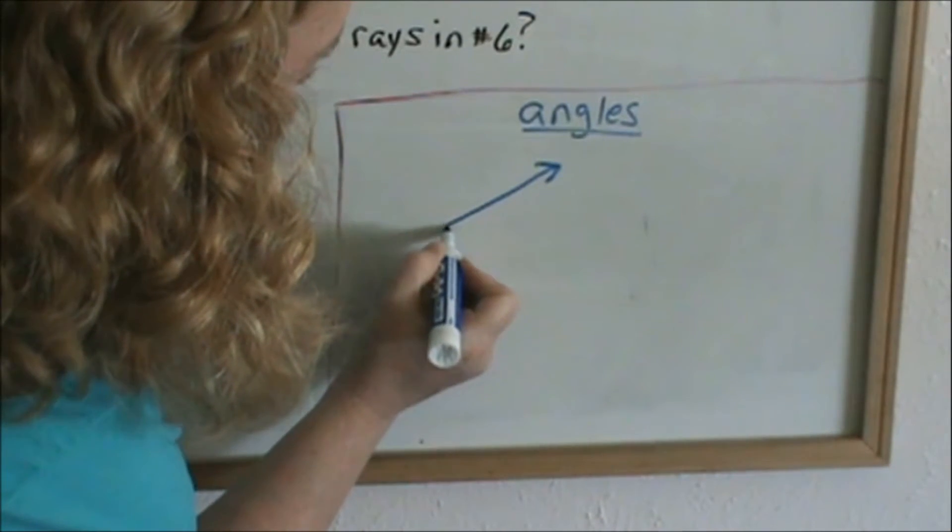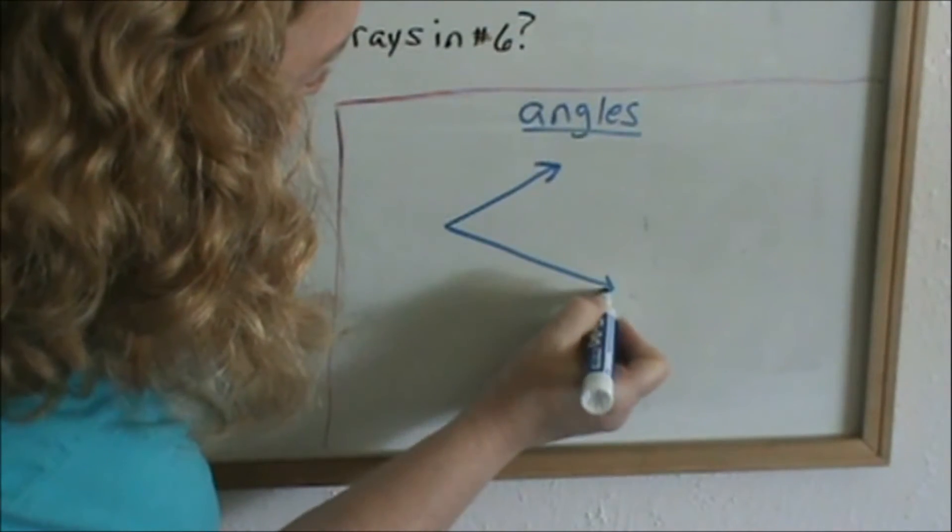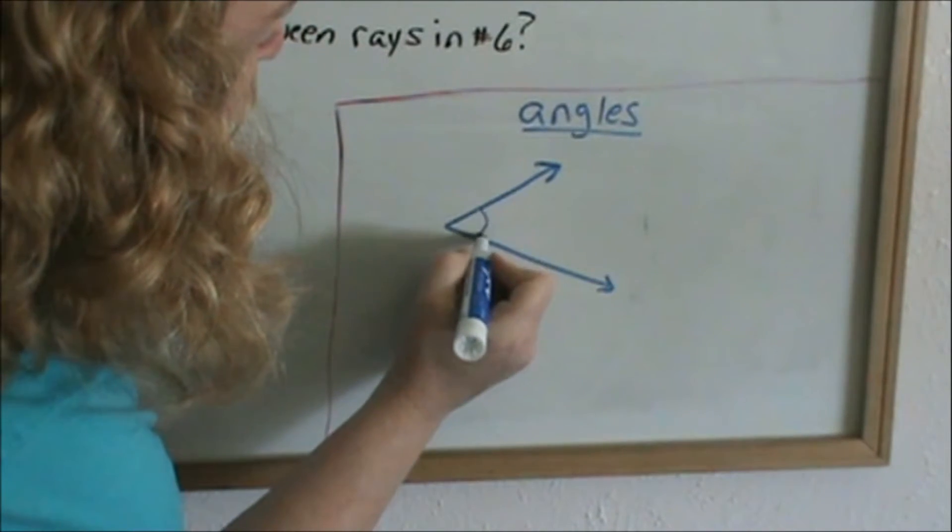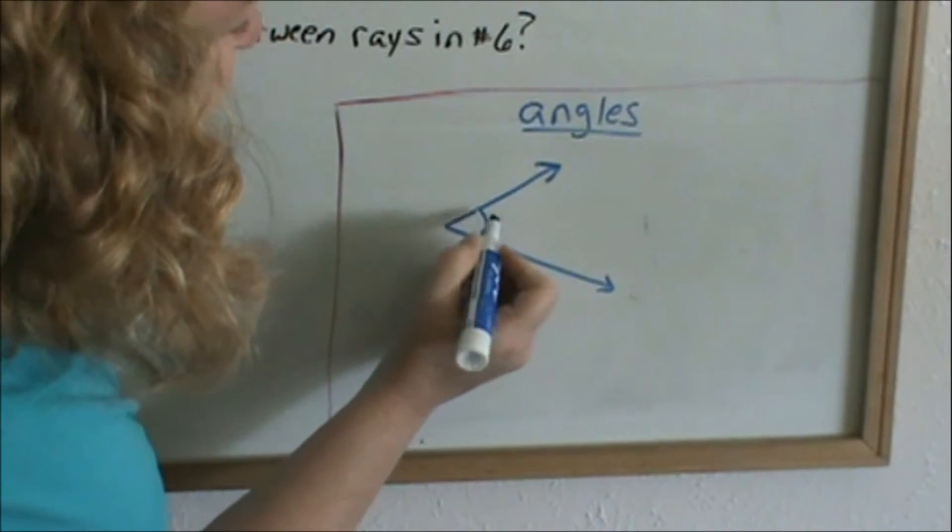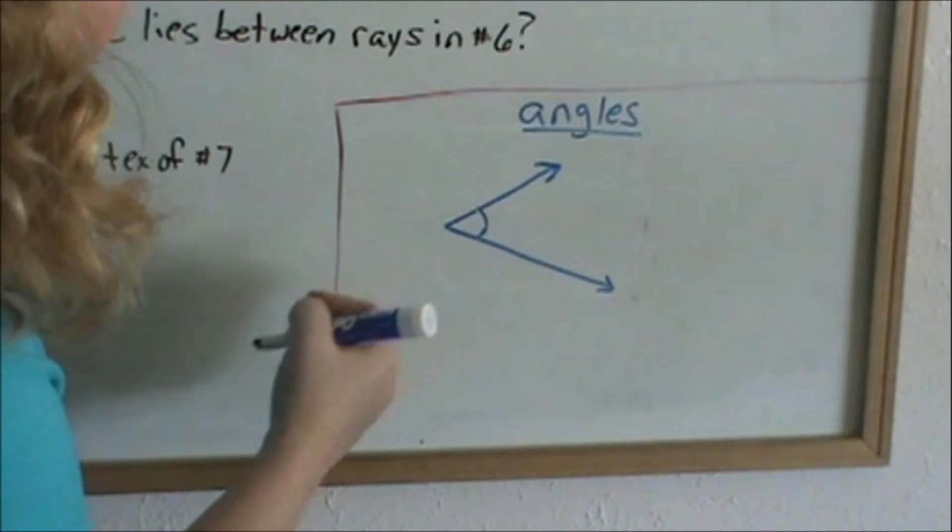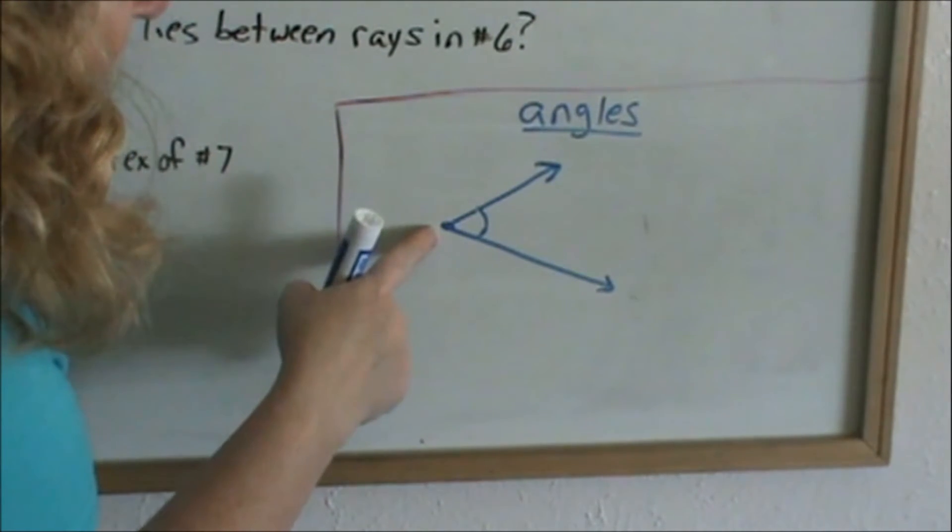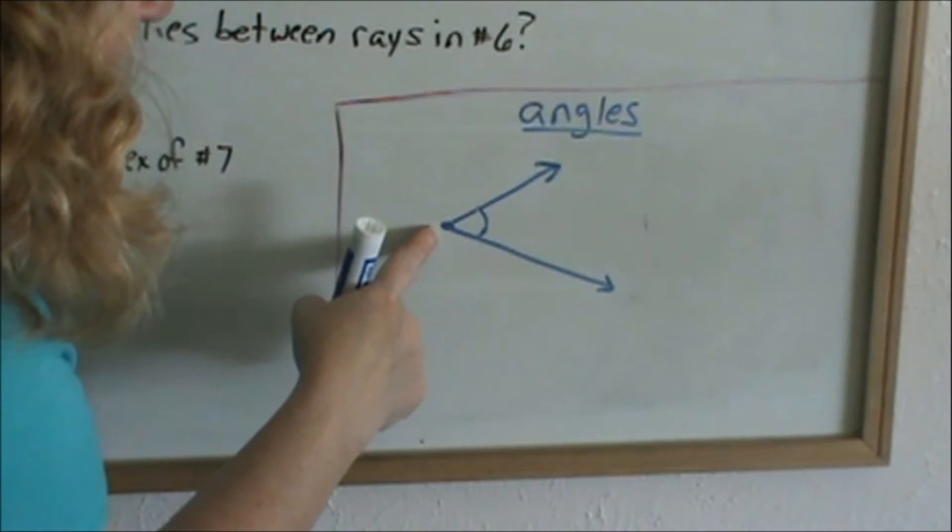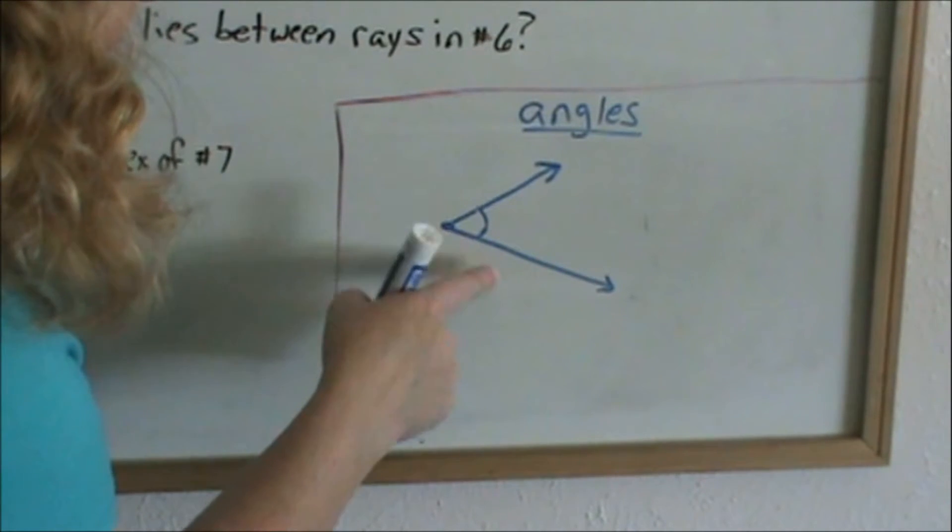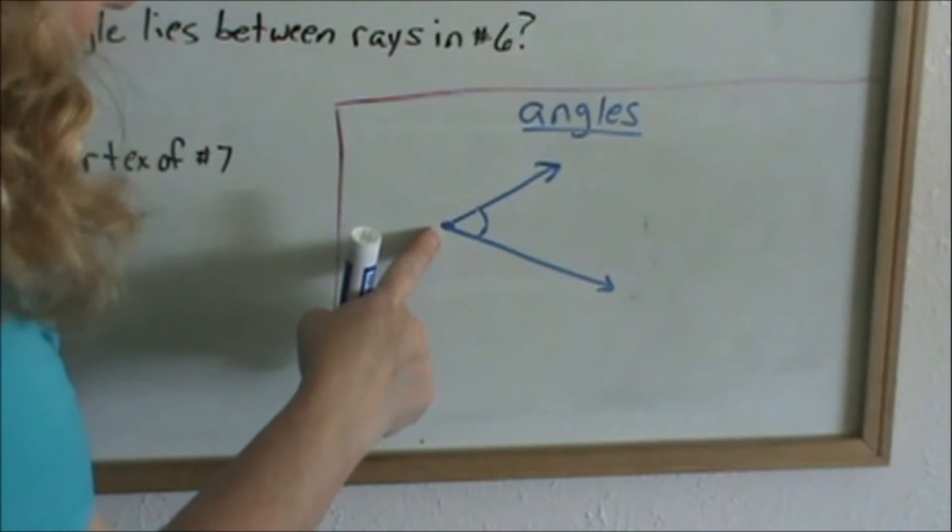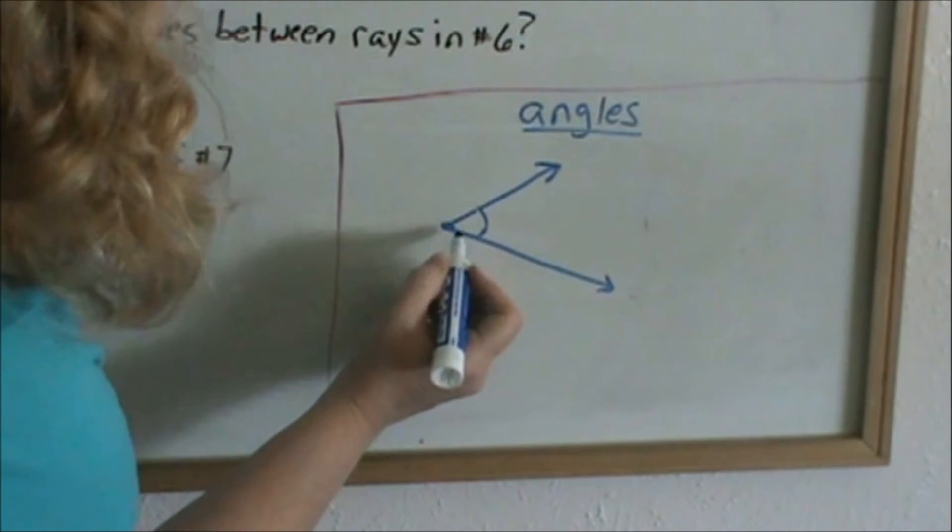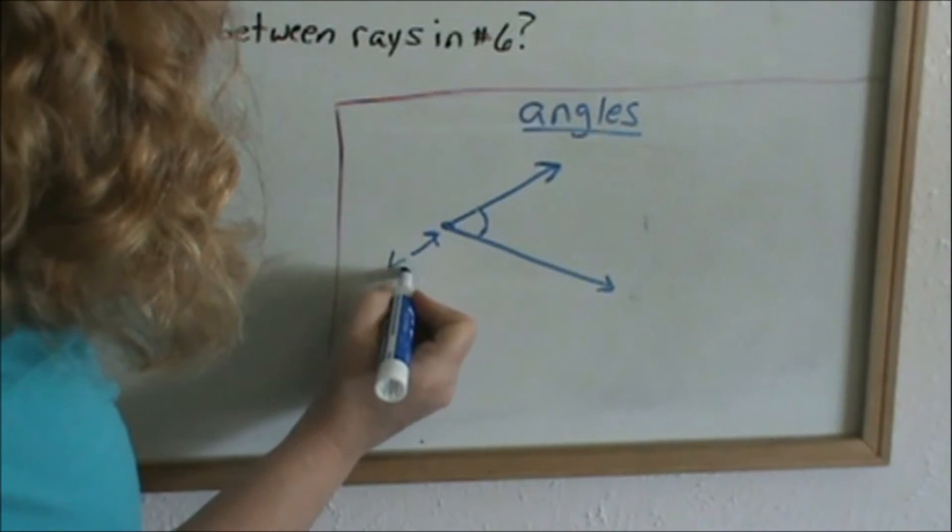An angle is formed when you draw two rays together. There's a ray. When I put two rays together, I have formed an angle and usually you see a little arc on the inside for the angle. Where the two rays, remember the endpoint, each ray has an endpoint. So where these endpoints are, that's called the vertex of the angle. So that's called the vertex.